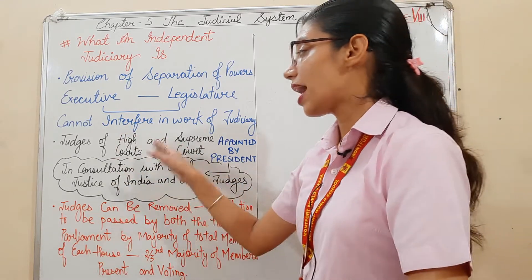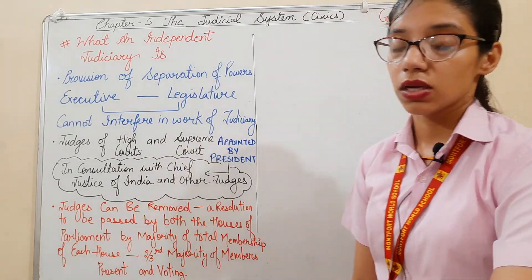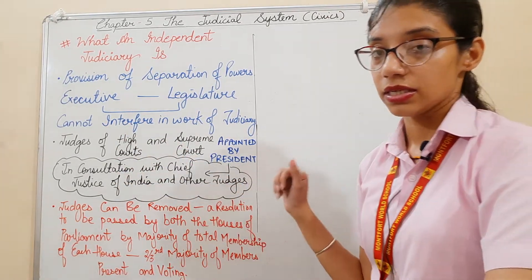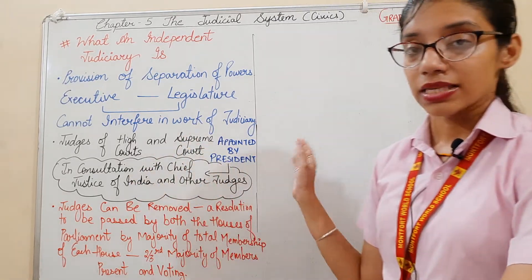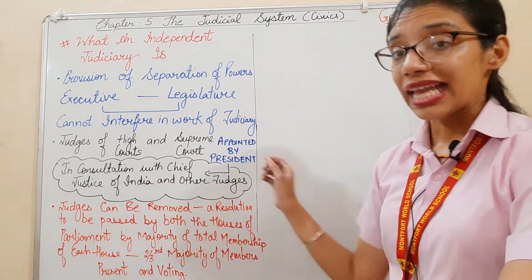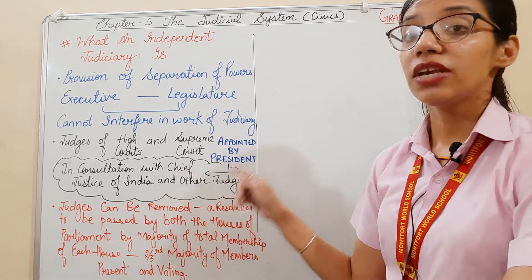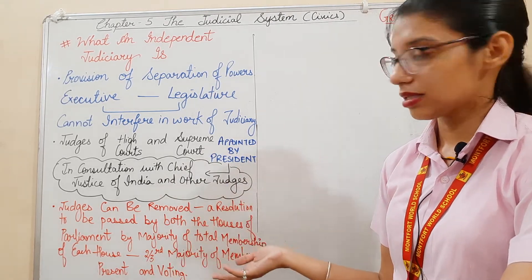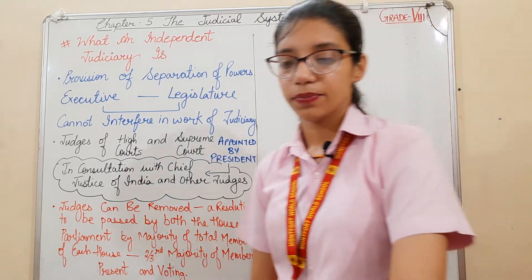Judges of the High Court and Supreme Court are appointed by the President, in consultation with the Chief Justice and other judges, and then the judges are appointed.